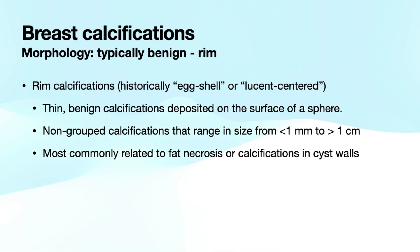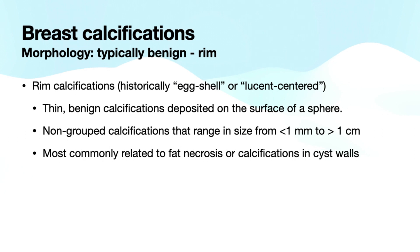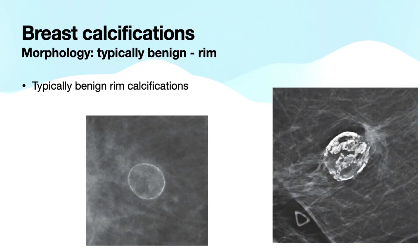We're going to move on to another typically benign type of calcification known as RIM calcifications. Historically these were known as eggshell or lucent-centered calcifications. These are thin benign calcifications that are typically deposited on the surface of a sphere. These non-grouped calcifications range in size from less than a millimeter to greater than one centimeter, and they're most commonly related to fat necrosis or calcifications in a cyst wall. Here we have some typically benign RIM calcifications.